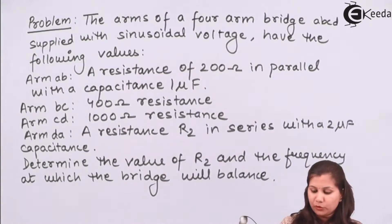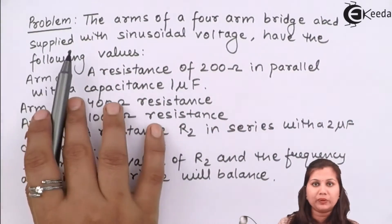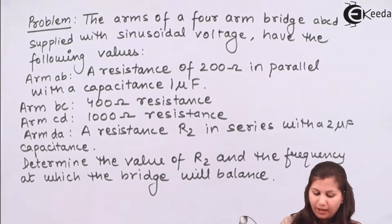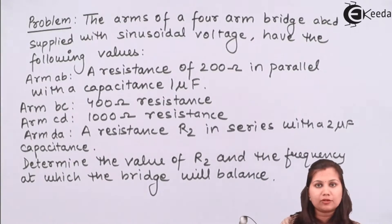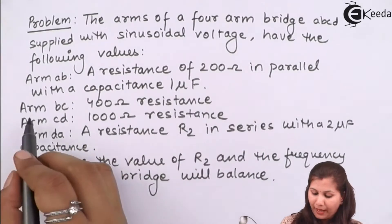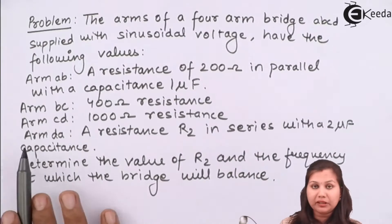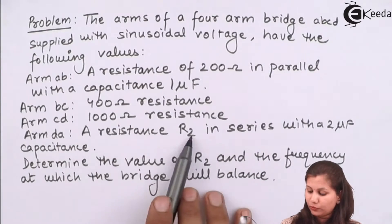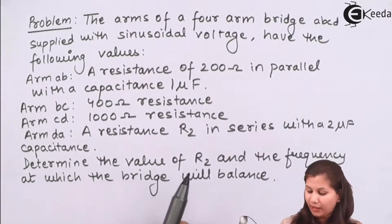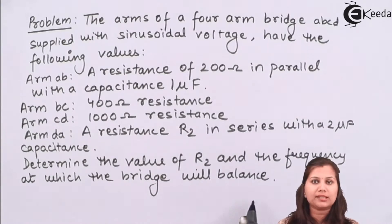Our problem is: we are given the arms of a four-arm bridge ABCD which is supplied with a sinusoidal voltage, and the four arms have the following values. AB is a resistance of 200 ohms in parallel with a capacitance of 1 µF. BC is a 400 ohm resistance. CD is a 1000 ohm resistance. DA is a resistance R2 connected in series with a capacitance of 2 µF. We have to determine the value of R2 and the frequency at which the bridge is balanced.